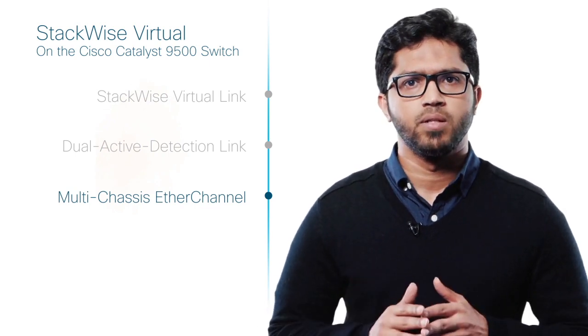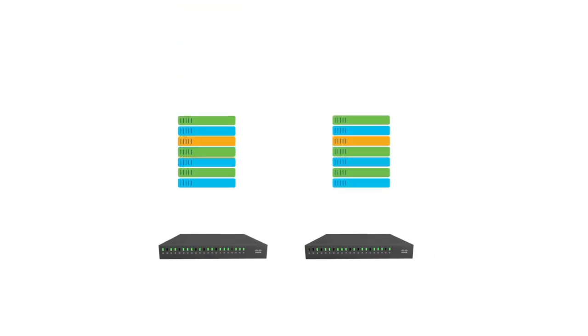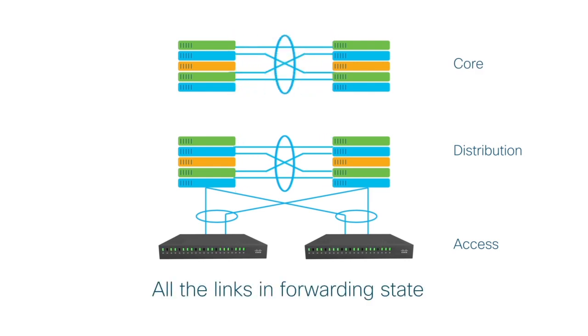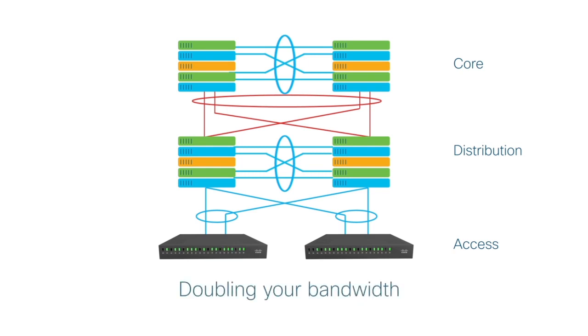Finally, the third actor in the StackWise Virtual architecture is the multi-chassis EtherChannel, which is like a port channel that spans across both StackWise Virtual switches to neighboring switches. The beauty of this is that you have all links in the forwarding state while also having redundancy at the same time, doubling your bandwidth and providing much-needed link-level redundancy.